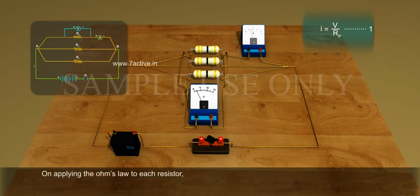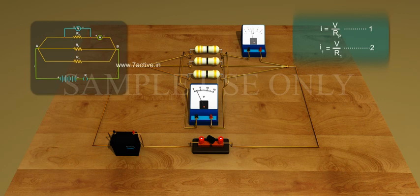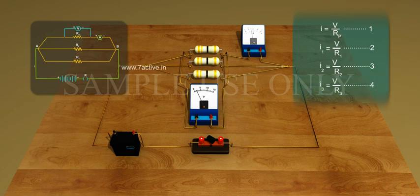Now applying Ohm's law to each resistor, we have I1 equals V by R1, I2 equals V by R2, and I3 equals V by R3.